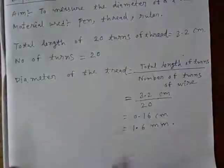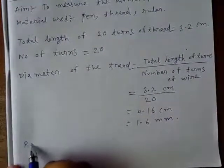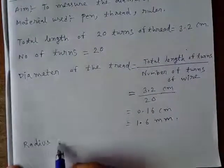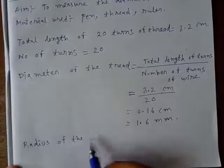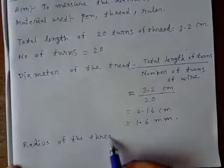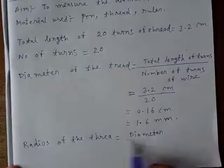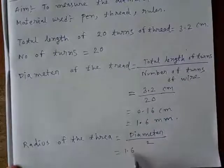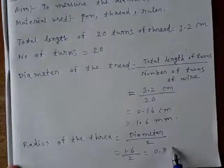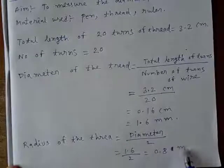Now, if it is asked that find the radius also, you can just divide. Radius of the thread, 0.16 centimeter is given by diameter divided by 2. So, 0.8 millimeter.